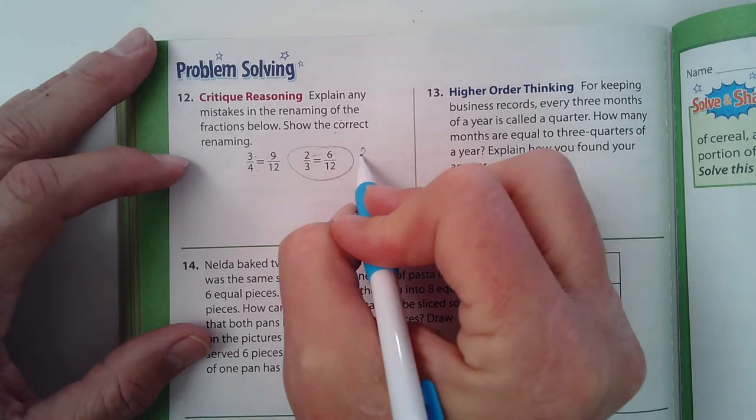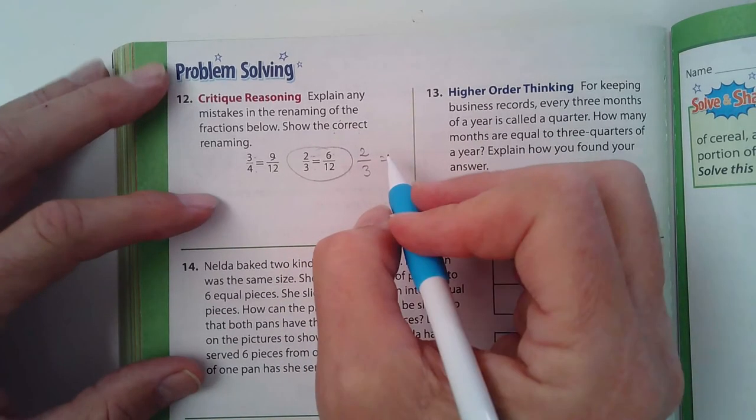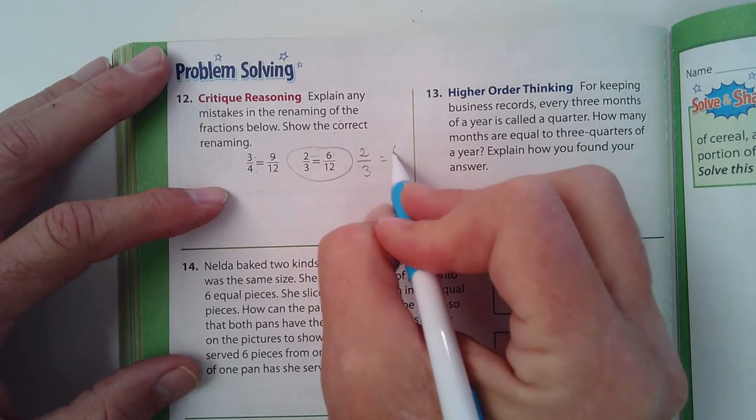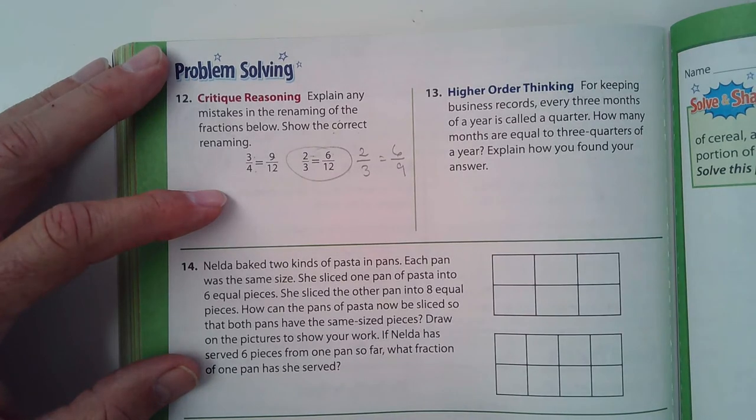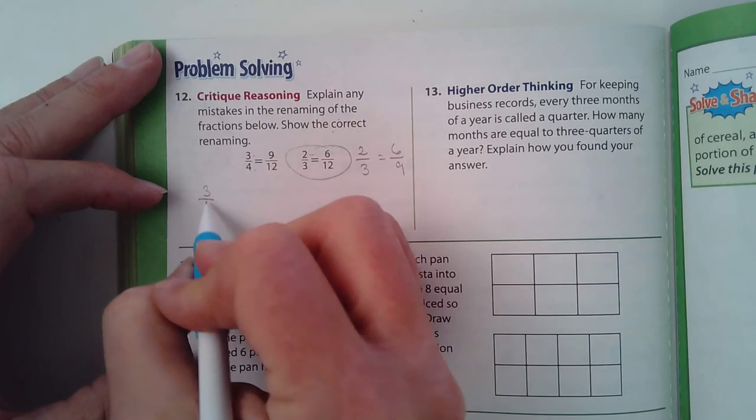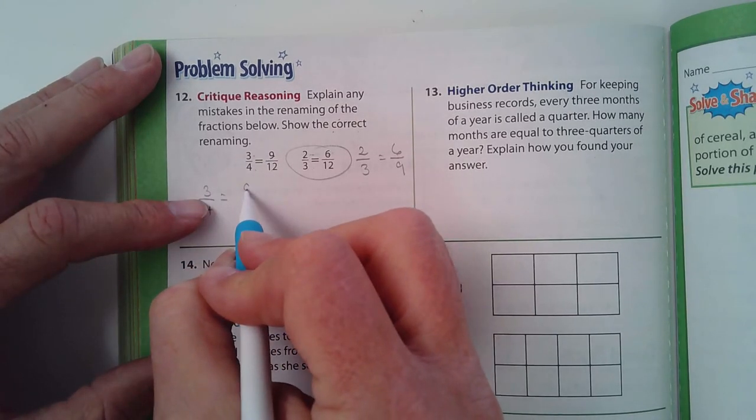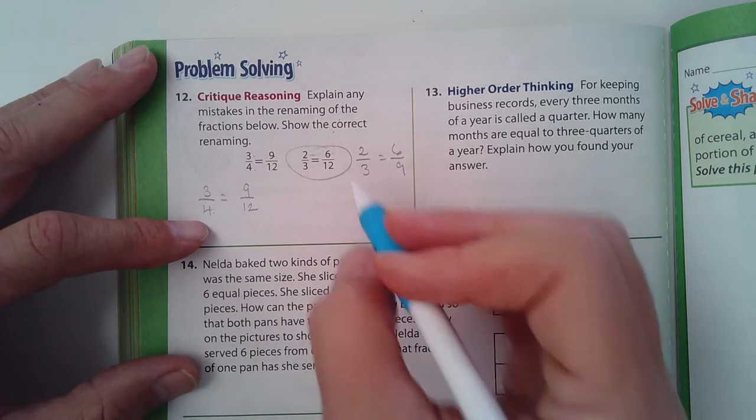So two-thirds—I'm trying to think if I can explain this a little differently. Two-thirds, if I multiplied each one by three, it would be six-ninths. Yeah, so three-fourths here, this one is correct. If three times three is nine and three times four is twelve, so that one is correct. This one is not.